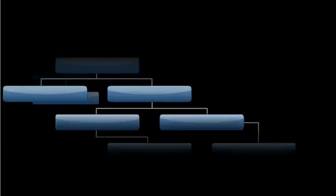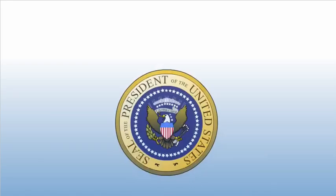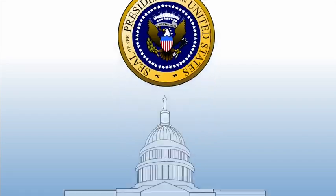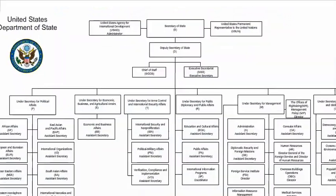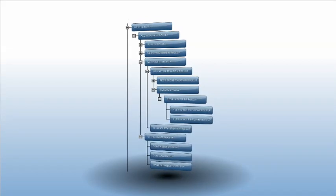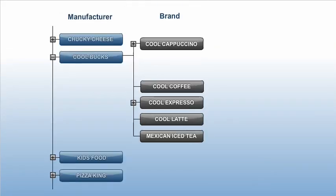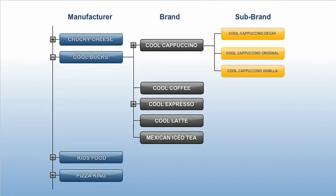Hierarchies — relationships among data items. Some relationships or hierarchies are straightforward in concept. For example, the office of the U.S. President and the Cabinet, followed by undersecretaries and assistants; a financial chart of accounts; a branding structure for a consumer goods company.